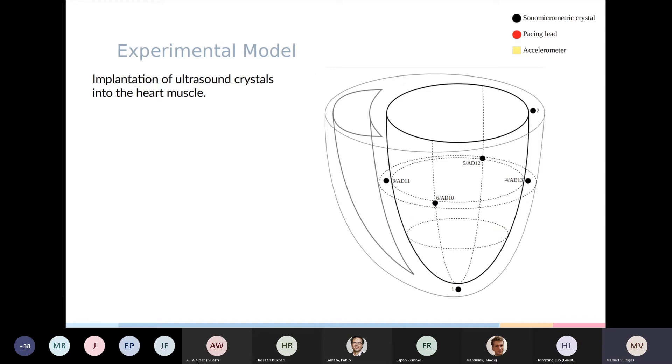So to study this, we use an experimental model with 12 animals where LBBB was induced by ablation. Here you can see a schematic of a left ventricle that shows how our model is designed. The black dots here represent ultrasound crystals that are placed in the myocardium and measure the distance between themselves, and this allows us to estimate the left ventricular volume using a three-axis ellipsoid model.